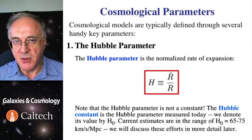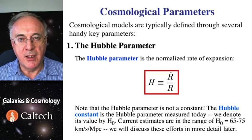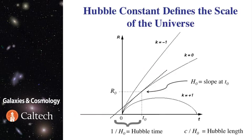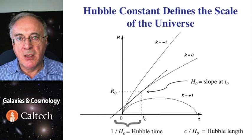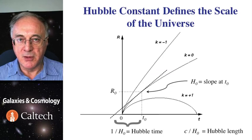Since its length over time in the numerator and length in the denominator, its dimensions are one over time. Essentially, Hubble constant gives the scale of the universe. It's a slope at the given time, and therefore, when you draw a tangent on r of t curve,